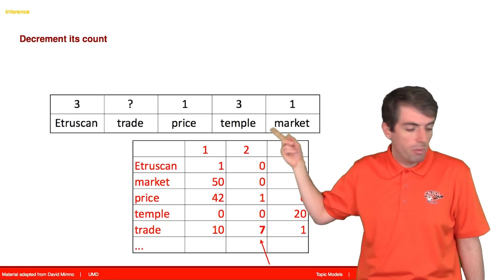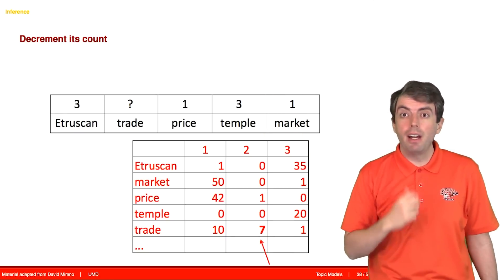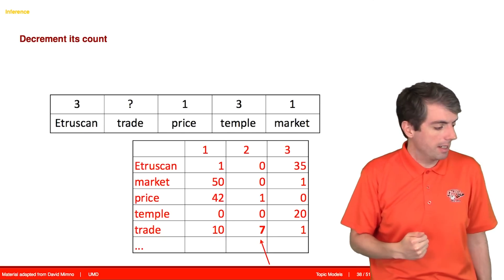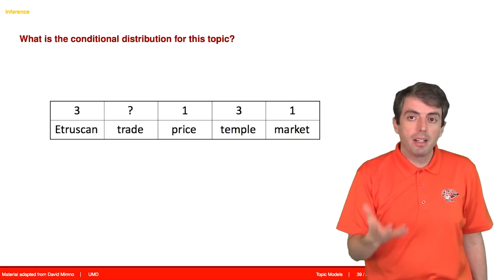Now that it's done that, we don't know what the topic assignment for trade is. We need to figure that out, and we're going to use the conditional probability distribution that I showed you before to do that. So now let's plug it into that equation.